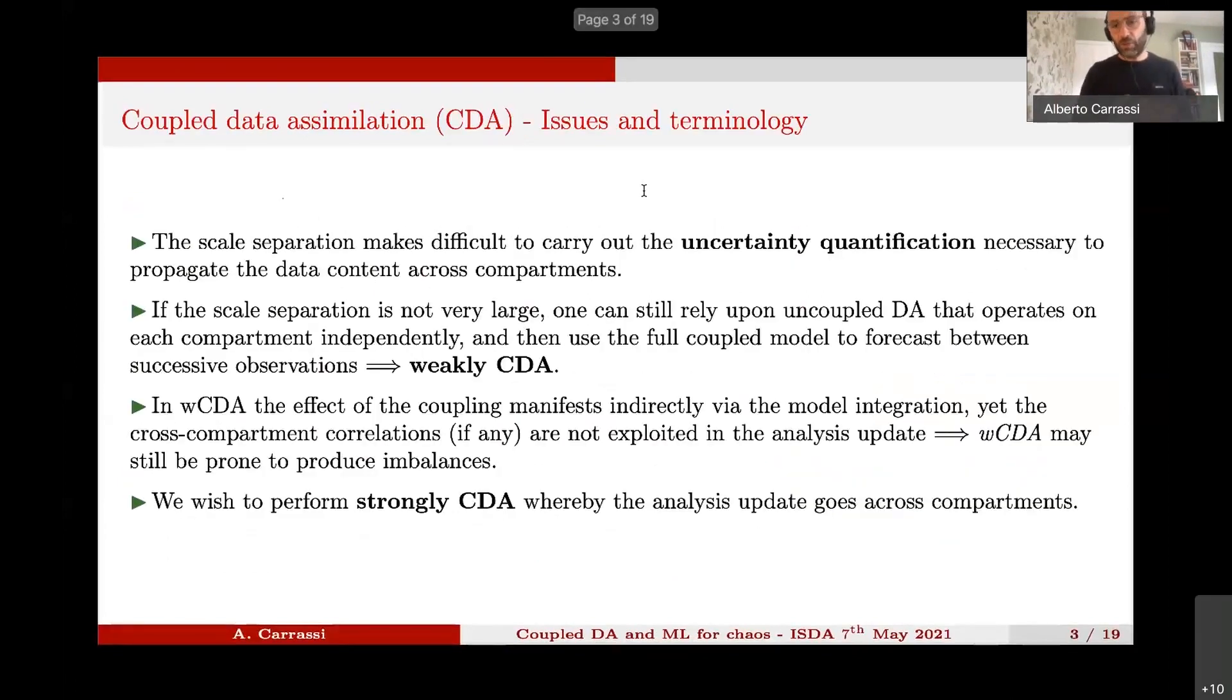In fact, the climate models are a classical example of system with temporal and spatial scale separation. So, in the context of data assimilation, you know very well that probably the main issue is the fact that the scale separation makes it difficult to carry out the uncertainty quantification that is necessary to propagate the information of data from one subcomponent of the model to the other. And it is known that if the scale separation is not very large, we can still rely upon an uncoupled data assimilation in the sense that we run a coupled model and then the update is separated between the two subcomponents. And this is what usually called as weakly coupled data assimilation.